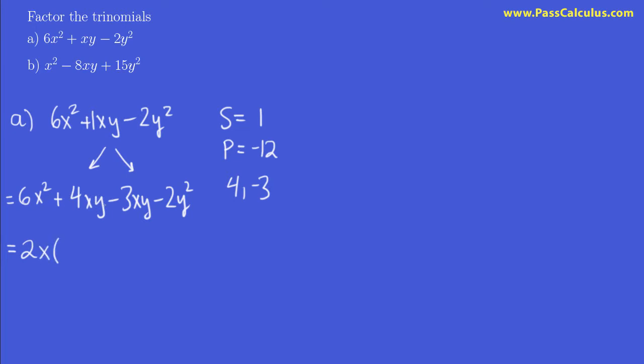But there is a y here but not there so we cannot pull out a y. So what goes in these brackets? Well, 2x times what gives me 6x squared, that would be 3x. And 2x times what gives me 4xy, that would be 2y.